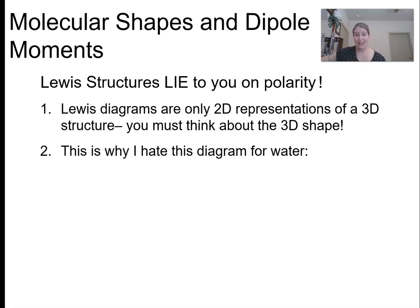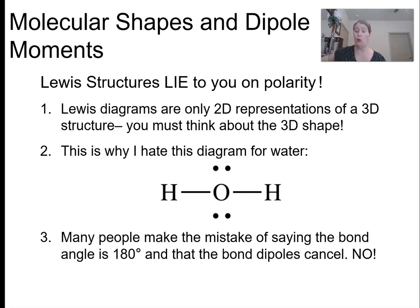That's why I hate, hate, hate this diagram for water. I hate it so much. It's technically correct. It has two bonds. It has two lone pairs. But especially in first year chem, I don't know how many people tell me this is perfectly symmetrical. So water is nonpolar and then I'm tearing my hair out. Because this is not perfectly symmetrical. Water is bent because it has four electron centers. And so Lewis dot diagrams will lie to you. You have to think about the three dimensional structure.